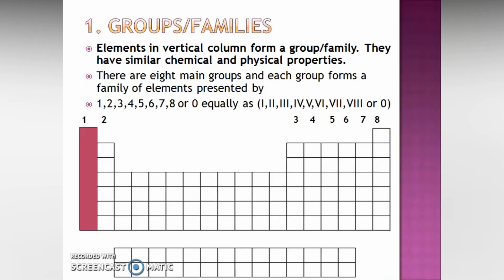Now, the groups or the families. The elements on the periodic table are classified into columns which are called the groups or family. Now, we have 8 main groups on the periodic table.